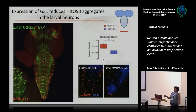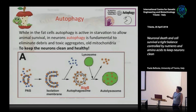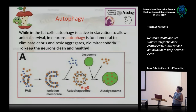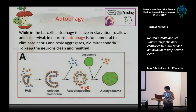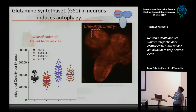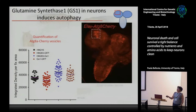GS1 was reducing the size of the huntingtin aggregates in the brain. One of the mechanisms we already know is autophagy. We found that overexpression of GS1, together with mutant huntingtin, was increasing autophagy — suggesting that this animal has a higher level of autophagy, and probably it is autophagy that is reducing the size of the aggregates.